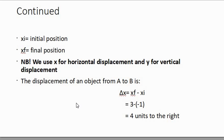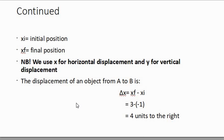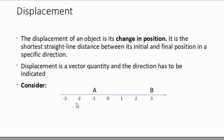Back to the example: position A was at negative 1 and position B was at 3. The displacement of an object from A to B is delta X equals final position minus initial position. So our final position at B was 3, minus our initial position of negative 1, and we get a final answer of 4 units to the right. We can count: 1, 2, 3, 4 — so we have 4 units to the right from A to B.